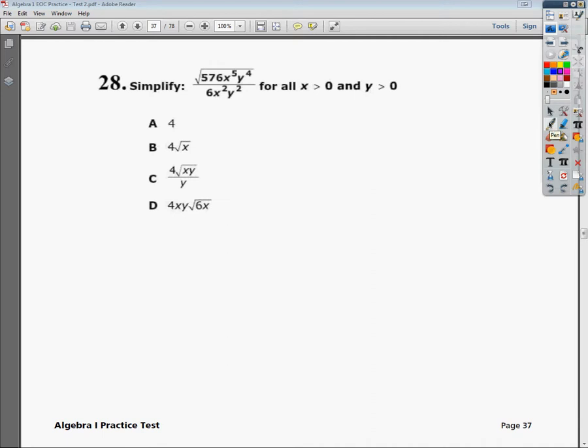This is the Algebra 1 practice test question number 28. This thing's kind of a beast, I'm not going to lie. It's not really that complicated, it's just the idea of how do you square something with an exponent. So you have x to the 5th and it's the square root of the x to the 5th. It's kind of mind-jarring a little bit, but not that much.